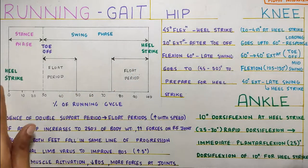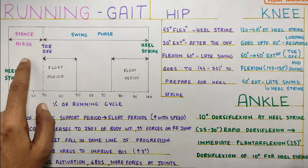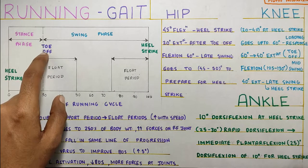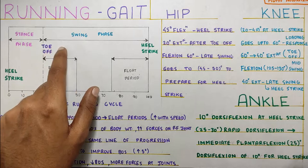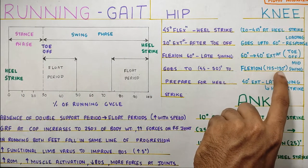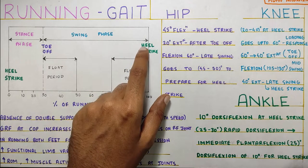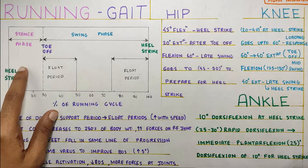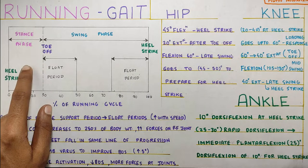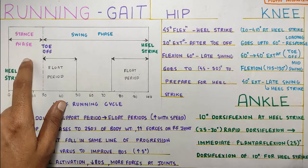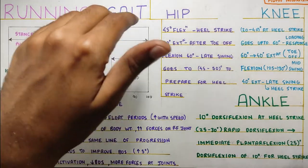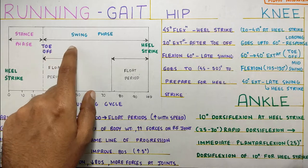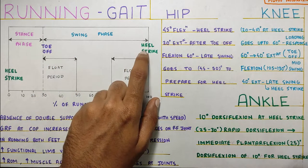At the knee: 20 to 40 degrees at heel strike, going up to 60 degrees, then back to around 40 degrees at toe off. During swing phase, flexion goes up to 125 to 130 degrees, then returns to 40 degrees for heel strike. At the ankle: 10 degrees of dorsiflexion at heel strike, which goes up to 25 to 30 degrees of rapid dorsiflexion, followed by immediate plantar flexion of around 25 degrees to push off, and finally returning to 10 degrees of dorsiflexion at heel strike.